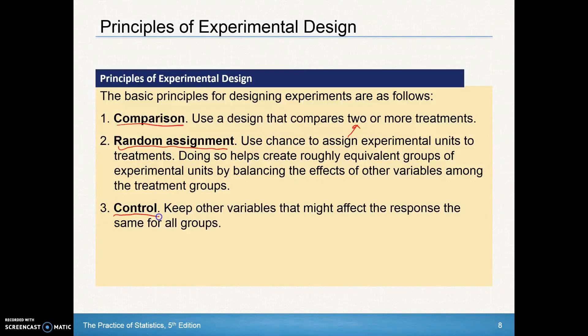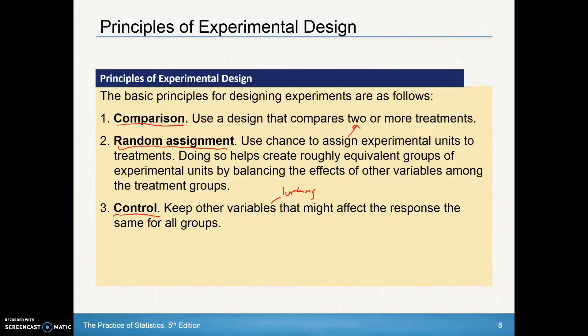Number three: control. What we need to do is keep other variables — those other lurking variables — from confounding our experiment. That's where a lab experiment is really good, because we can control all of those pieces and reduce, if not eliminate, all of the other lurking variables.